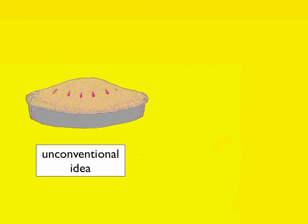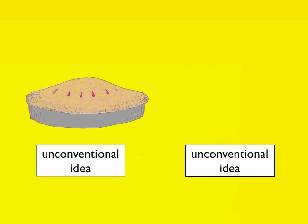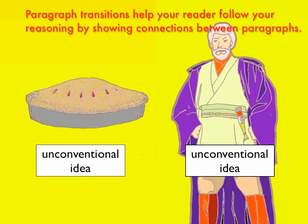Here it is with the transition. The couple served not cake, but pie at their wedding. It was unconventional, but a great idea. Why not? Here's another unconventional idea. We should elect a Jedi to be president. Now it makes sense. That's what transitions are for.